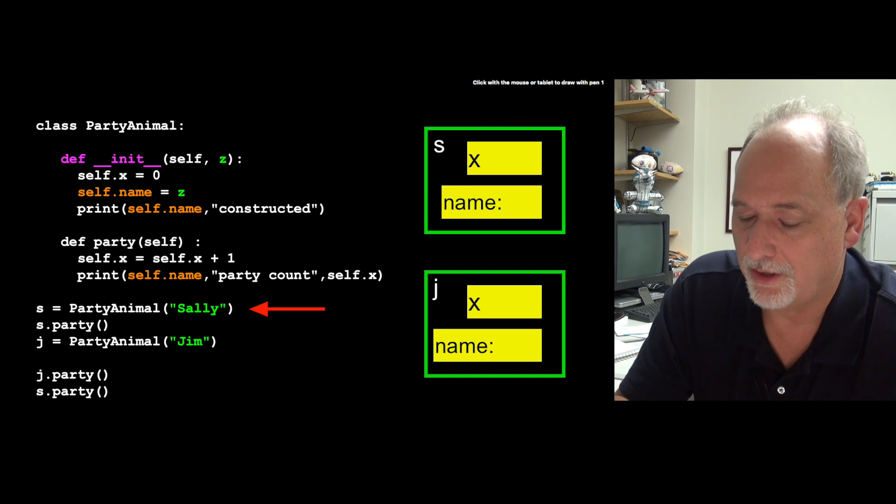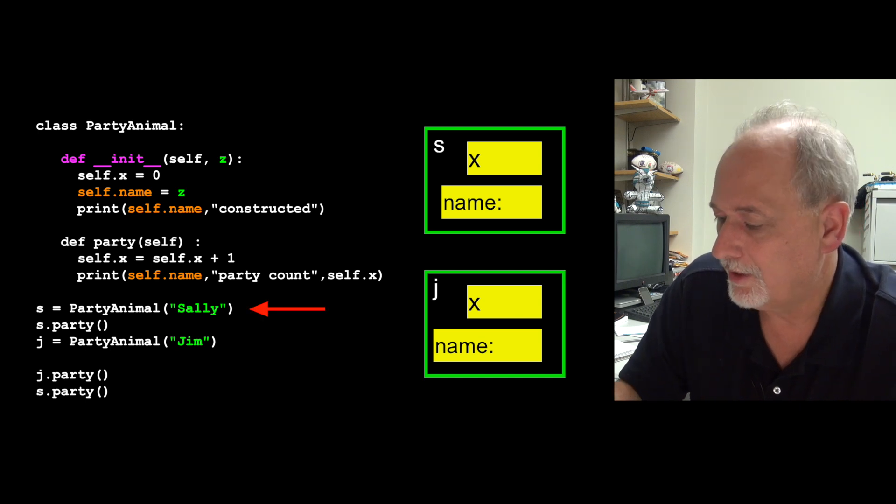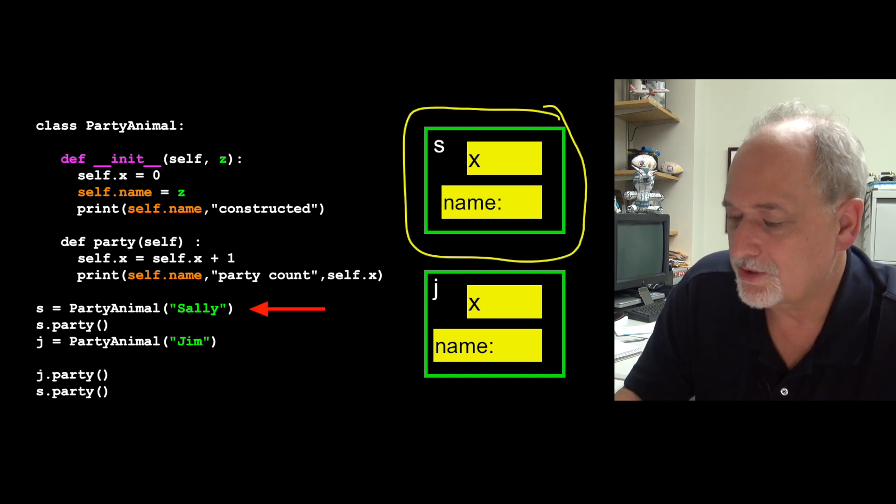As it runs down here, when this is called, it makes one instance and stores that in the variable s. And there's a variable x in there, there's a name in there, there's an init method in party, and that's all in here. All that stuff is in here.